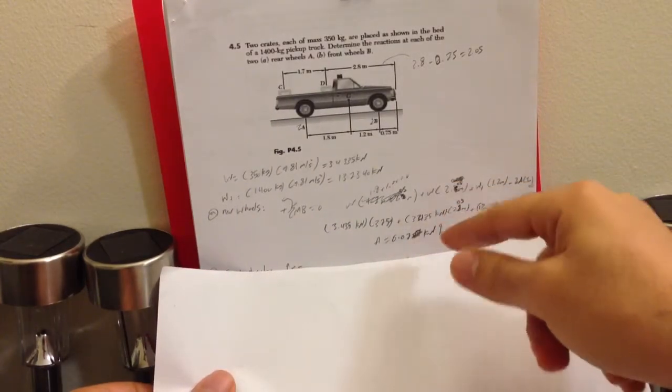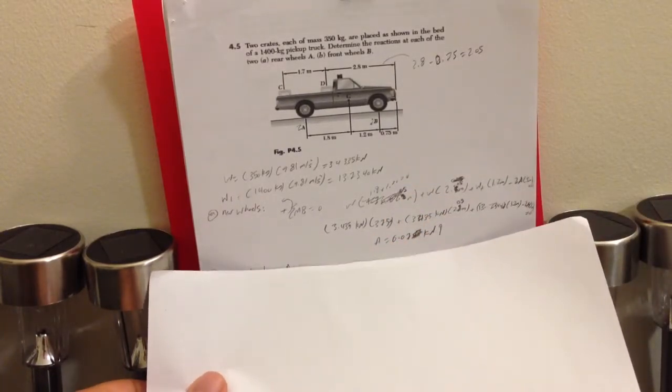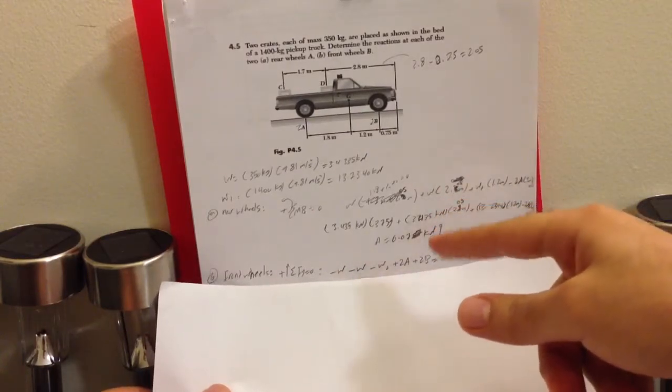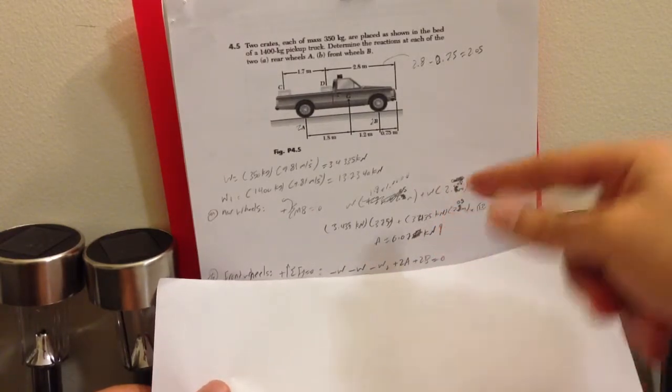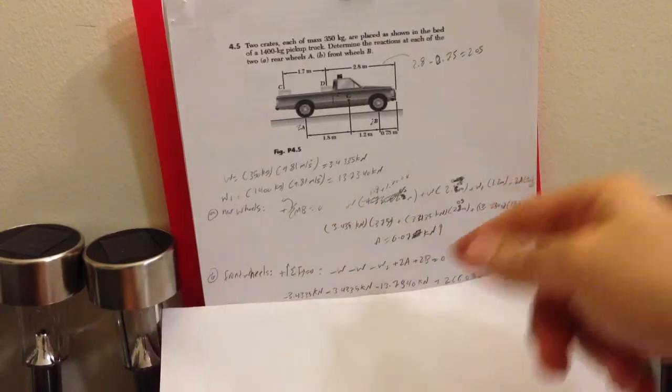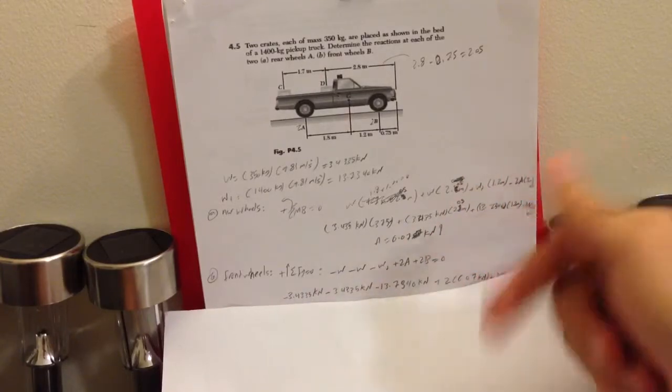The second thing: we want the front wheel B. We have to do the same thing as we did in finding the real wheel A. Of course, sigma Fy equals zero and we should find sigma B.